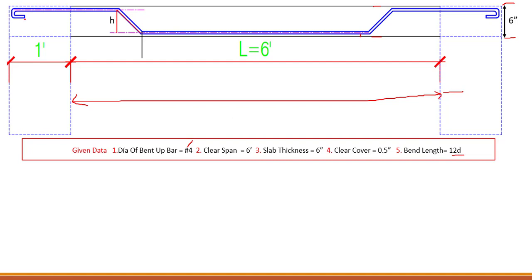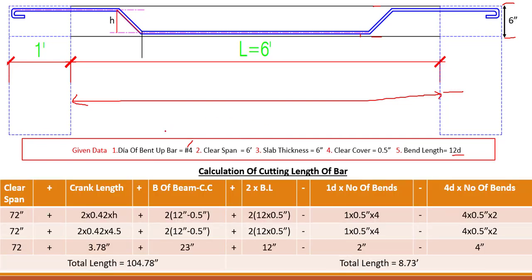This is a 180-degree bend and the length of this bend is 12d. So that is the given data. Now let's look at the calculations and the formula to find out the cut length of this bar. The formula starts with clear span — the dimension between two beams — plus crank length. This portion is basically the crank.